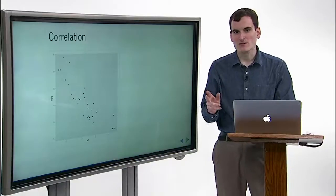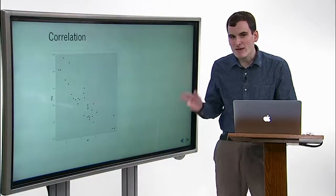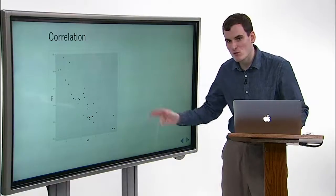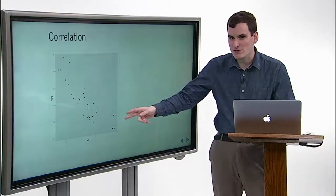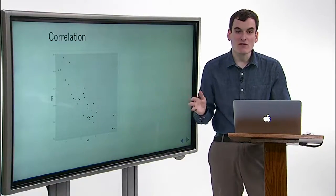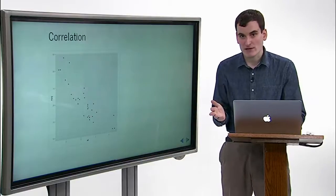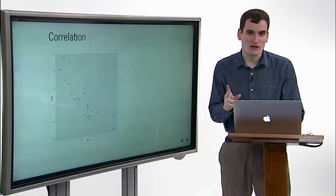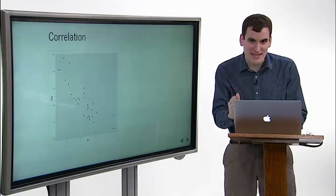But is it possible that this trend happened by chance? Maybe it just so happened that the cars we chose with heavier weights happened to have lower fuel efficiency, and vice versa, even though there was no underlying relationship. To test that, we need more than a graph. We need to perform a statistical test.